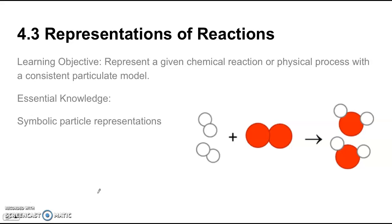4.3 is on representations of reactions. Learning objective here is represent a given chemical reaction or physical process with a consistent particulate model. And the essential knowledge is just simply showing symbolic particle representations. One thing you want to be careful of here is make sure you pay attention to the number of reactants and products in the drawing and make sure they represent the mole ratios for the reaction that's taking place. And the symbolic representations in this case it's just circles representing the atoms. It could be any sort of symbol that represents what's happening though. But please pay attention to the number of each reactant and product and make sure it corresponds to the mole ratios.